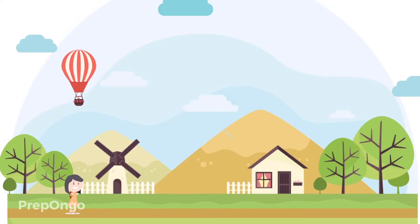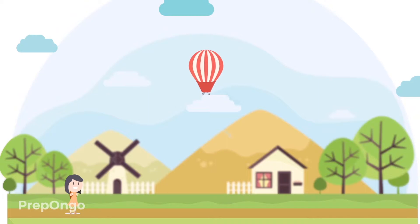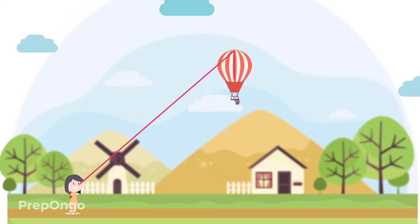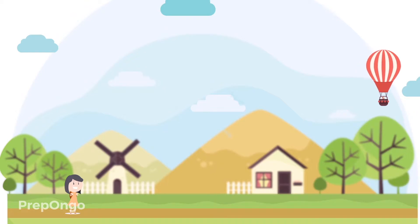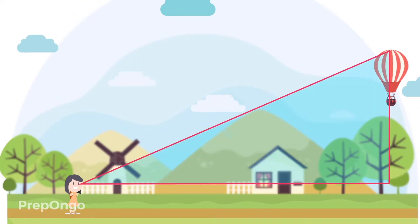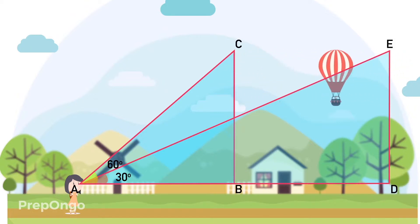Let's first visualize this question. The girl finds that the angle of elevation to the balloon from her eyes is 60 degrees. If you look here we get a right angle triangle ABC, and in this right angle triangle angle A is 60 degrees. After some time the angle of elevation becomes 30 degrees, giving us one more right angle triangle ADE, where angle A is 30 degrees. We have to calculate the distance moved by the balloon, which is the distance BD.